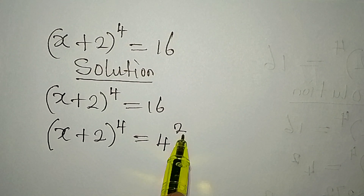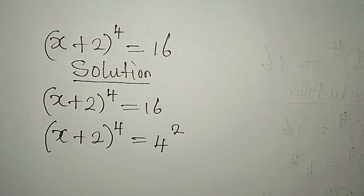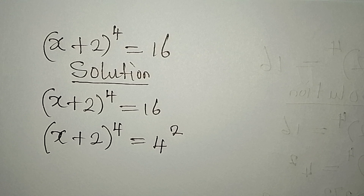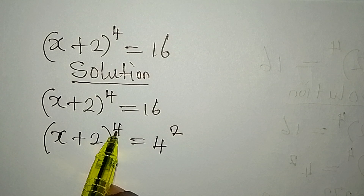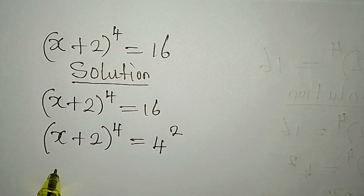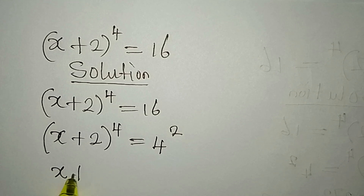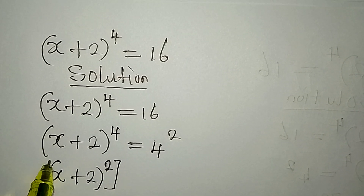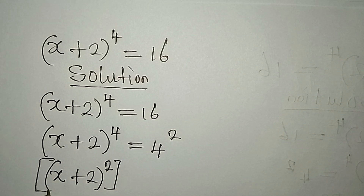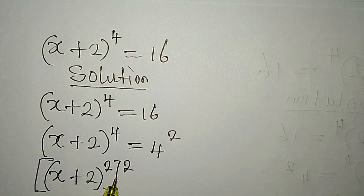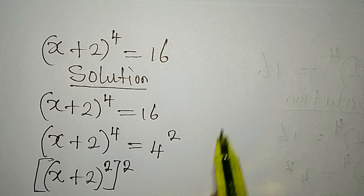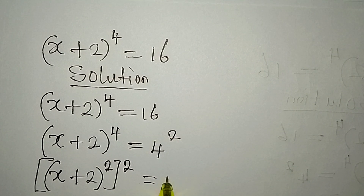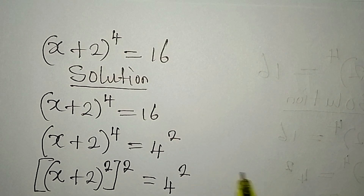We write 4 to the power of 2 because we want to apply the difference of two squares. So we break this down: (x plus 2) squared, then raised to the power of 2, so that 2 times 2 gives us the 4. This equals 4 to the power of 2.